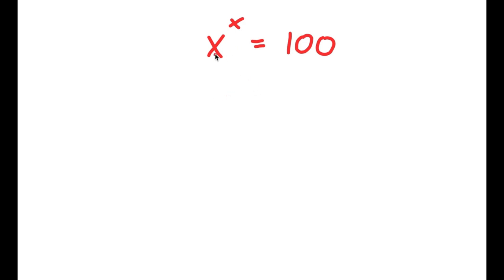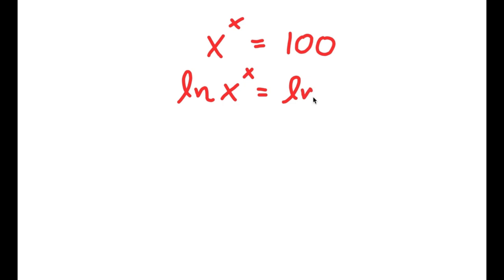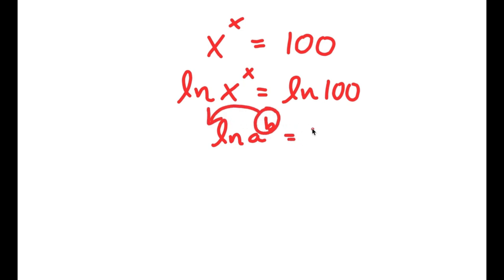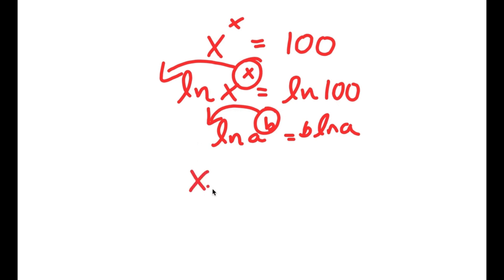In this problem, I have x to the power of x is equal to 100. I'm going to first start by taking the natural log on both sides. So I have ln of x to the power of x is equal to ln 100. Now if I have something in the form ln a to the power of b, I can move b to the front, so this equals b times ln a. For ln of x to the power of x, I can move x to the front and I get x times ln x equals ln 100.